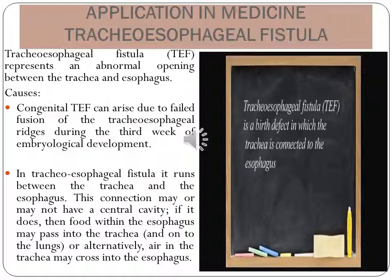In tracheoesophageal fistula, a connection runs between the trachea and the esophagus. This connection may or may not have a central cavity. If it does, food within the esophagus may pass into the trachea. Alternatively, air in the trachea may cross into the esophagus.